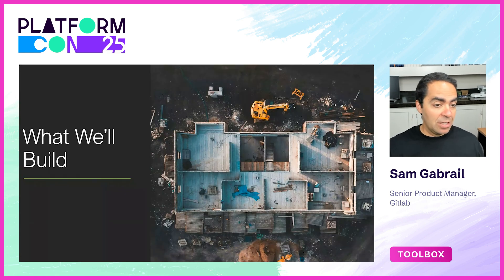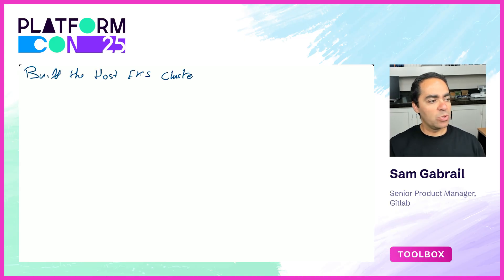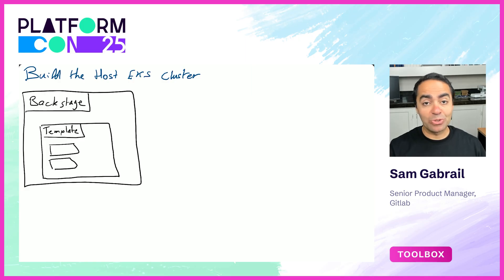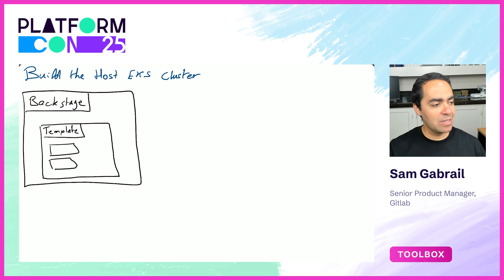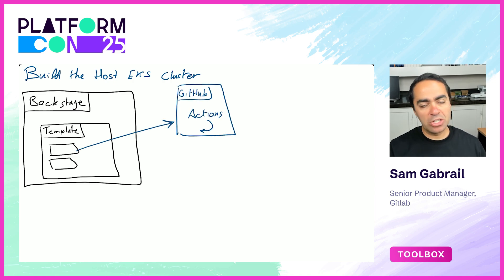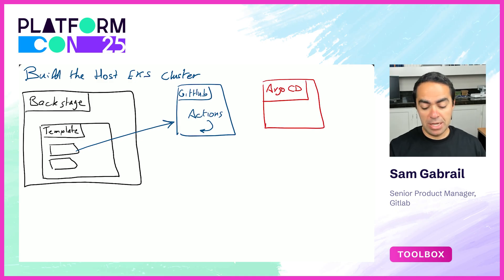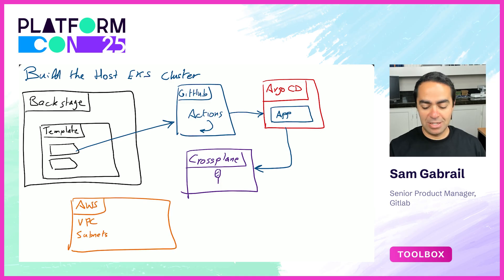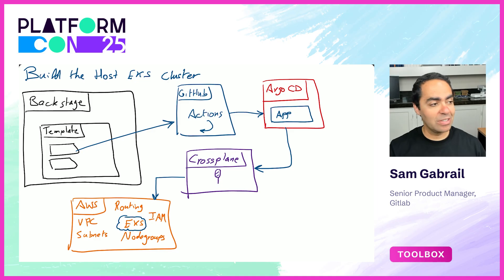So what are we going to build? We have two pieces in this demo. The first piece is building the host EKS cluster using Backstage as the front-end portal — not only for developers to request virtual clusters, but also for platform engineers to build EKS clusters. A template in Backstage triggers GitHub Actions, which runs a pipeline that creates an Argo CD application, and that application triggers Crossplane to provision resources inside AWS and build the EKS cluster.